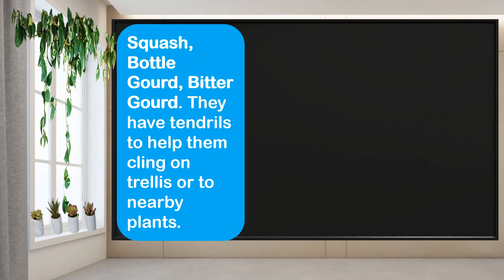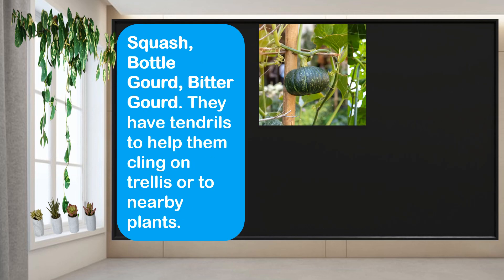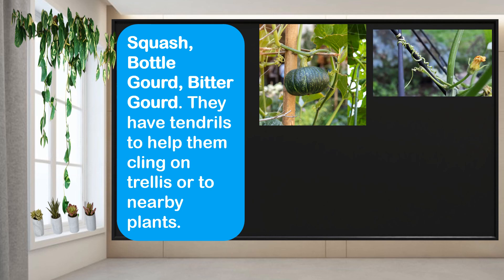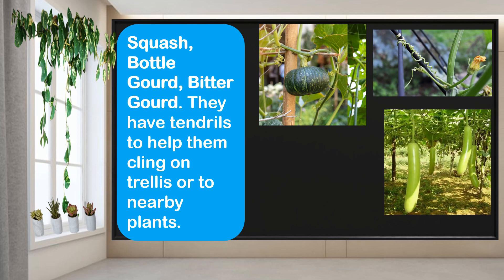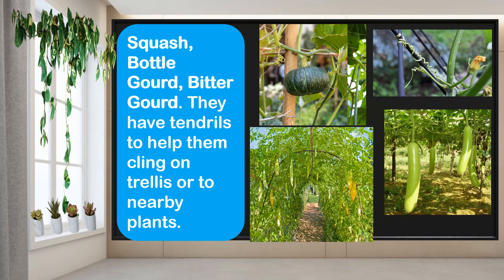Squash, bottle gourd, and bitter gourd have tendrils that help them cling on trellises or to nearby plants.